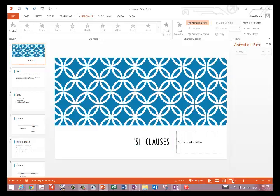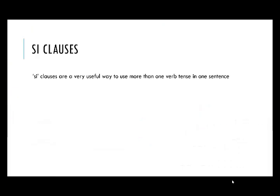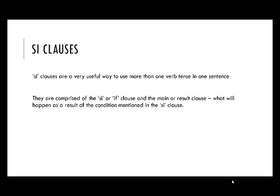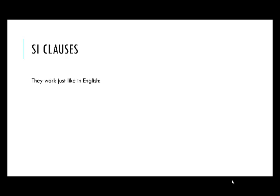Si clauses are a very useful way to use more than one verb tense in one sentence. They're comprised of the si or if clause and the main or result clause — what will happen as a result of the condition mentioned in the si clause. So in the si clause, if something happens, then something else will happen as a result of that condition. They work just like in English.